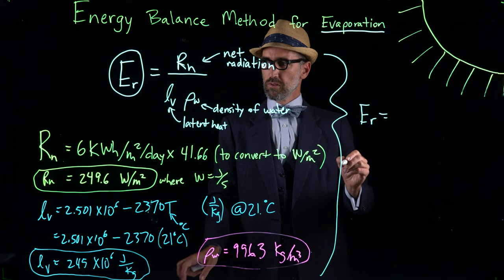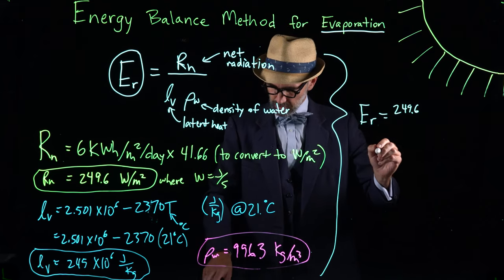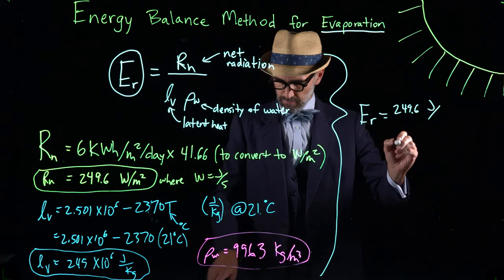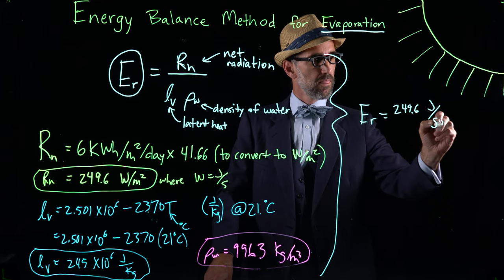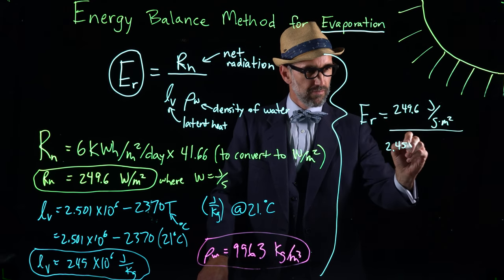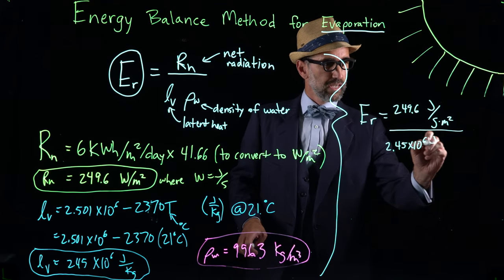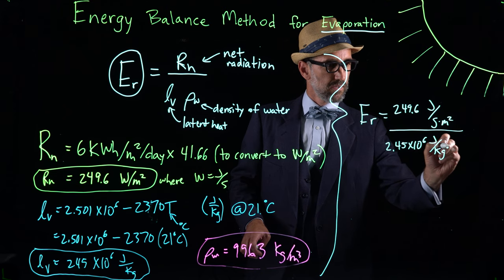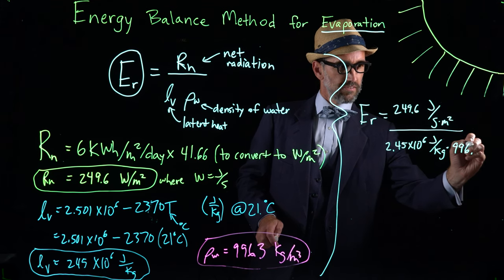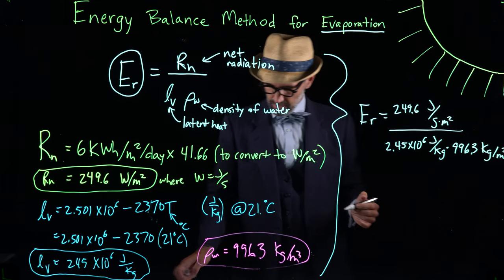And we can substitute them in to solve for E of R. E of R is now equal to 249.6, and I'm going to change the units slightly here. So I'm going to say joules per second meter squared over 2.45 times 10 to the 6 joules per kg, times our density of water, 996.3 kgs per meter cubed.